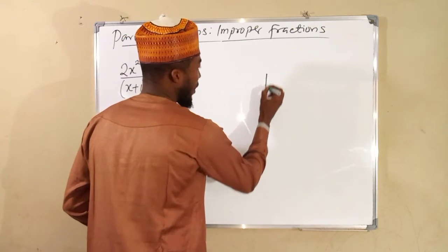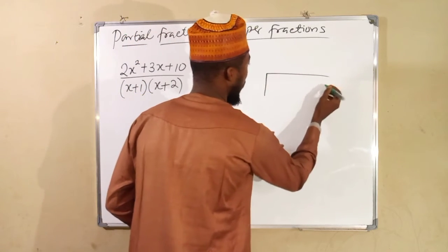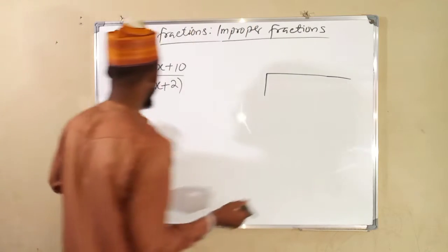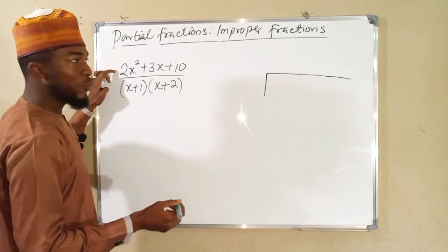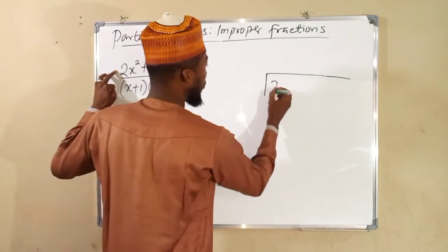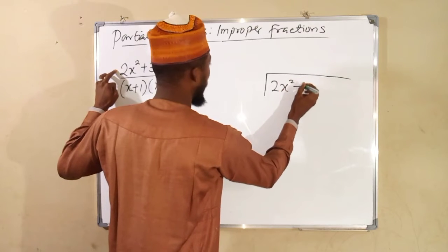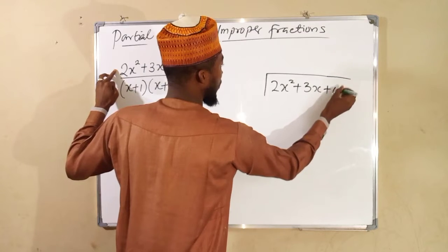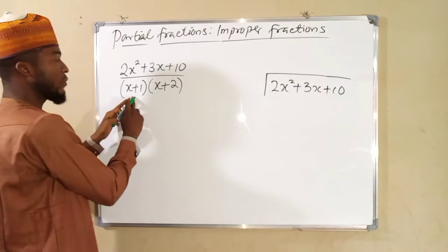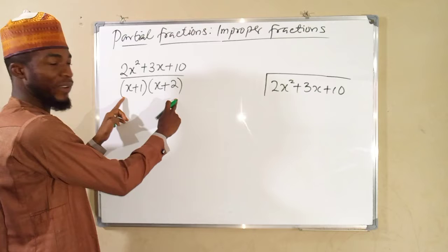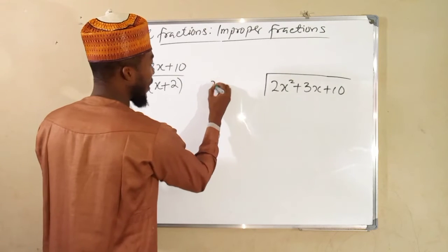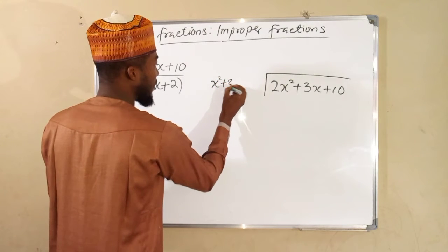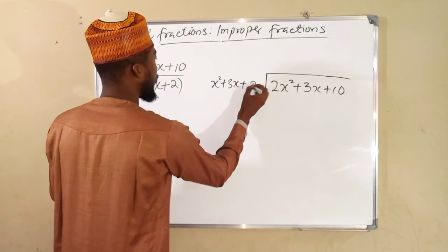So we are going to apply a long division method. We are going to divide this numerator by this. So we have 2x squared plus 3x plus 10. Then outside, the divisor, we have to split this first. And this becomes x squared plus 3x plus 2.